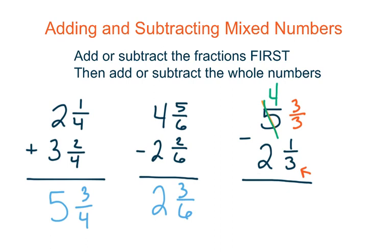Now we can subtract because we have a fraction for both. So 3 thirds minus 1 third gives me 2 thirds, and then 4 minus 2 gives me 2. It's super important that when we borrow a whole we actually subtract one from that whole number — we can't just create a whole and not subtract anything. We need to cross that number out and put one digit smaller, just like regrouping in regular subtraction.